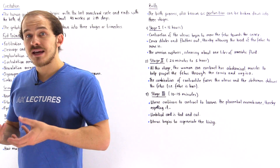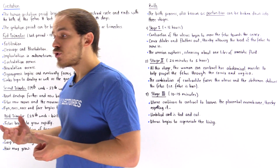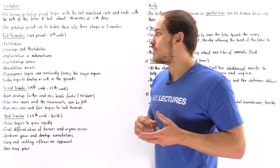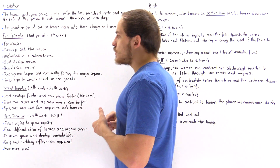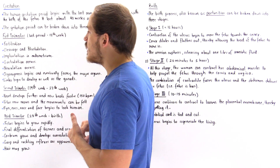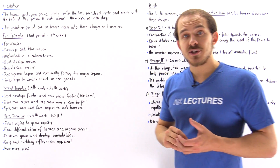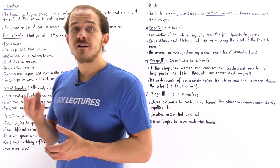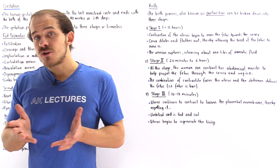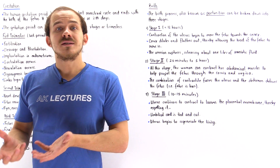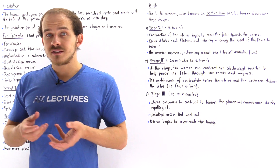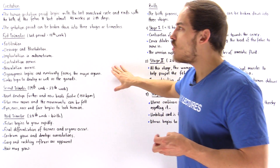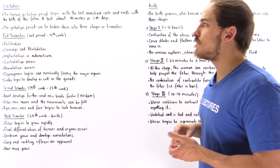The placenta is the organ that eventually facilitates the exchange of nutrients and gases between the mother and the fetus. Once implantation takes place, we also begin the process of gastrulation — the process by which we form the three different germ layers. These three germ layers eventually give rise to the different tissues, organs, and systems found within the adult individual. All of this takes place within the first trimester.